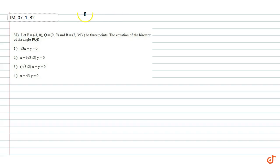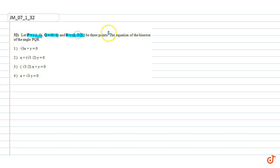In this question there are three points: P(-1, 0), Q(0, 0), and R(3, 3√3). We have to find the equation of the bisector of angle PQR.